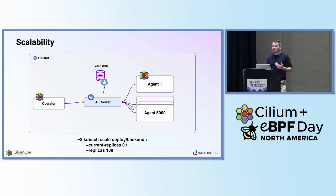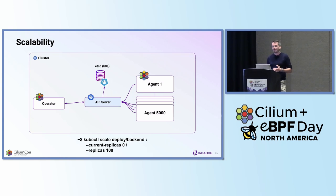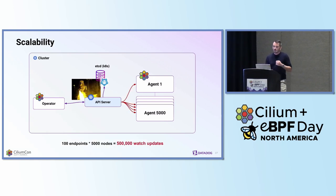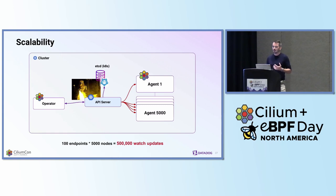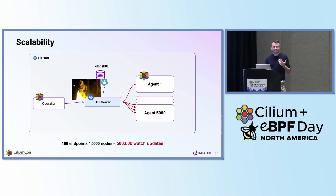Let's imagine we are using the default method. We have each identity and endpoint stored as an object through a custom resource definition on the Kubernetes cluster's API server, and let's say this is a fairly large cluster of about 5,000 nodes. If someone attempts to scale out a deployment and adds an additional 100 pods, this simple upscale will actually result in triggering half a million watch updates from the API server, as each Cilium agent will need to know about the new endpoints being created.